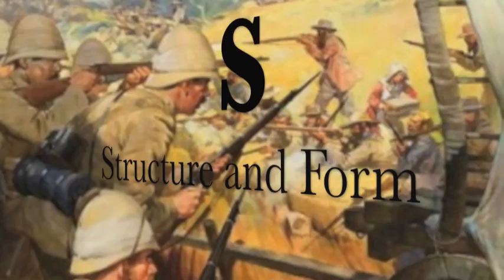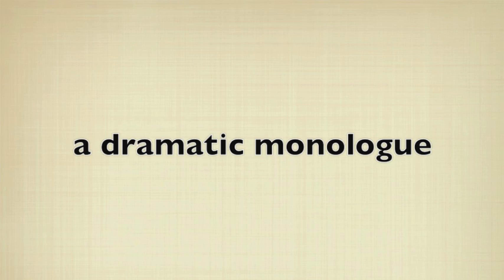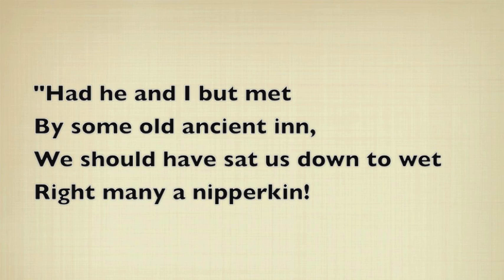Looking firstly at structure and form, it's clear from the speech marks that this is a dramatic monologue — one character talking to another. The character is a soldier who's returned from war, very likely from the Boer War since that was going on at the time this poem was written. Each stanza is four lines long, so we refer to that as a quatrain. This poem consists of five quatrains. There's also a regular rhyme scheme — met and wet rhyming, and inn and kin, so it's an ABAB rhyme scheme.